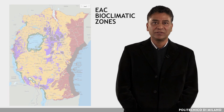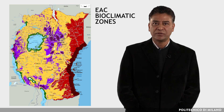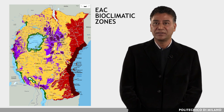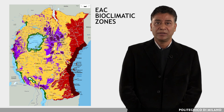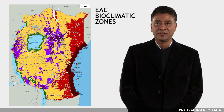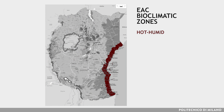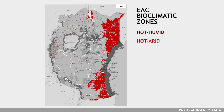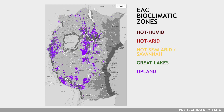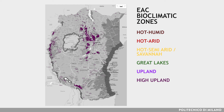In conclusion, the combination of these three methods led to the development of a map of climatic zones based on the effect of the climatic context on building design strategies. The EAC can be divided into six bioclimatic zones for energy-efficient building design: hot-humid, hot-arid, hot-semi-arid savannah, great lakes, upland, and high upland.